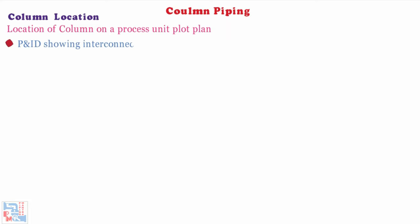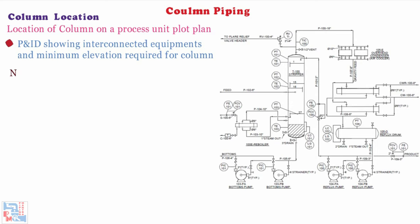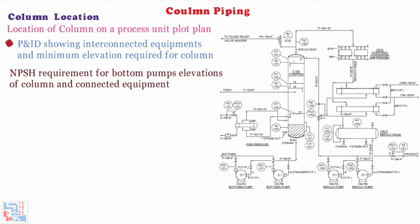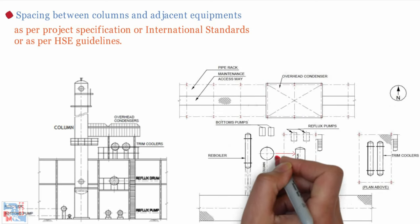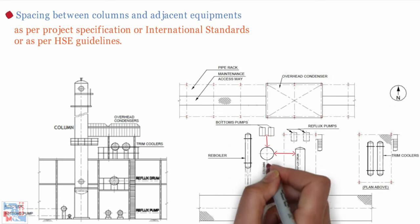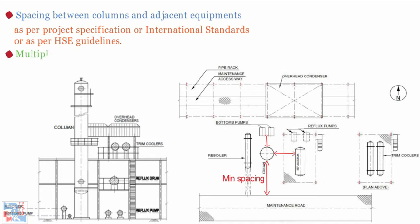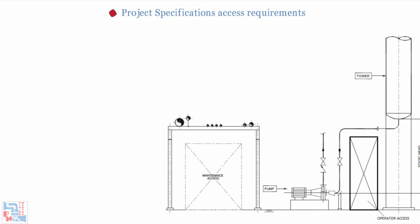Location of a column on a process unit plot plan shall be based on some criteria. PNID showing interconnected equipments and minimum elevation required for column, considering NPSH requirement for bottom pumps elevations of column and connected equipment as per process. Spacing between columns and adjacent equipments to be as per project specification or international standards or as per HSE guidelines.